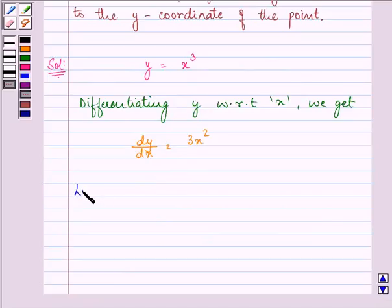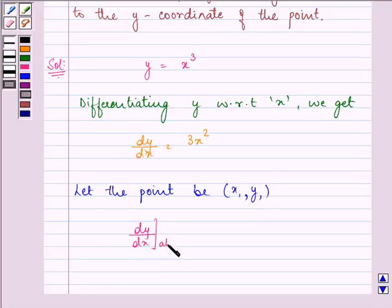Now let the point on the curve be (x₁, y₁). So at this point, dy/dx at (x₁, y₁) is equal to 3x₁², which is also the slope of the tangent.